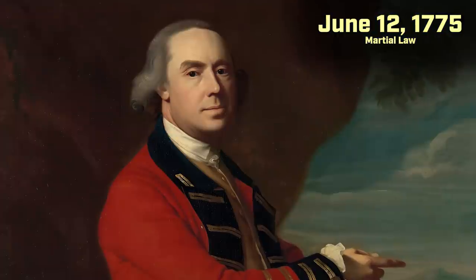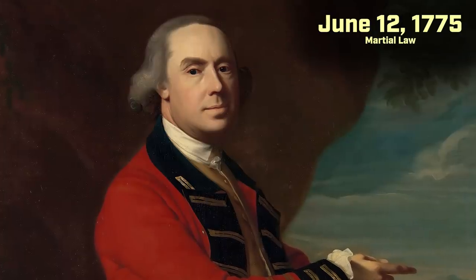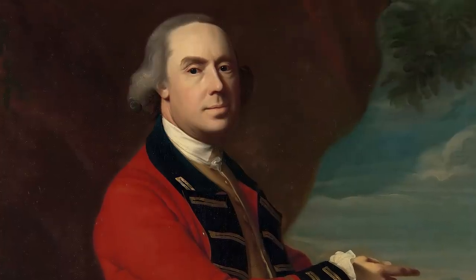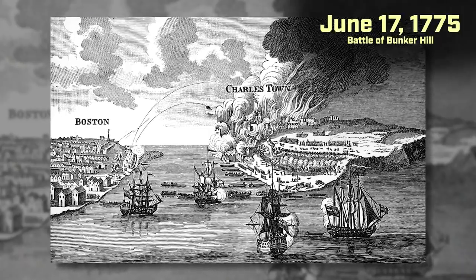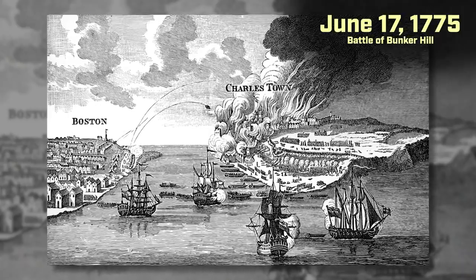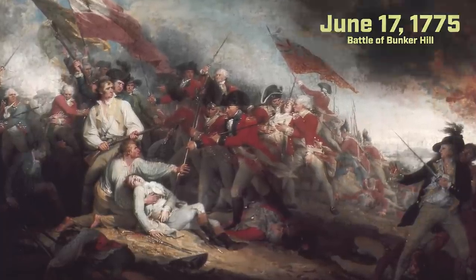On June 12th, General Gage of Britain put martial law in effect in Boston, saying anyone who helped the Continental Army would be considered a traitor. Americans, in response, fortified Bunker Hill. The British Navy saw this happening, opened fire on the hill, and Americans resisted. Eventually they lost the hill, but this was the first major conflict of the Revolutionary War — basically 2,400 British troops against 1,000 American troops in pitched battle.